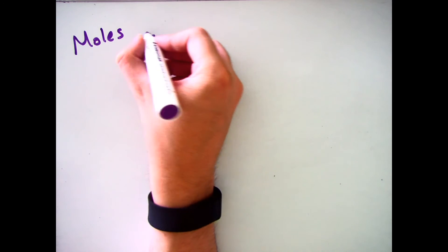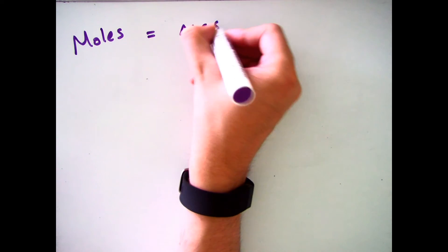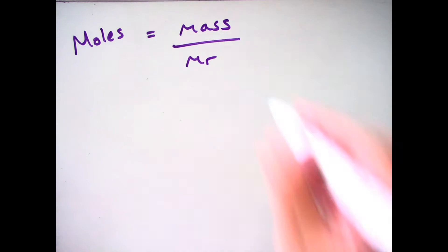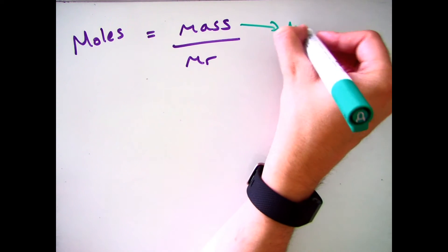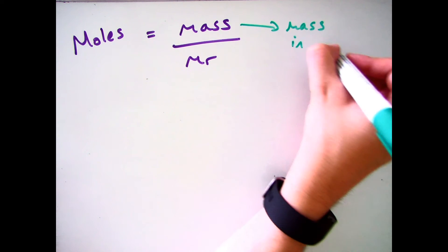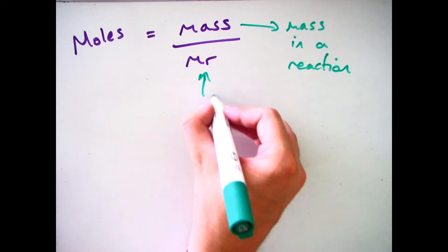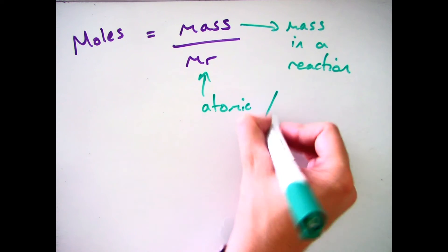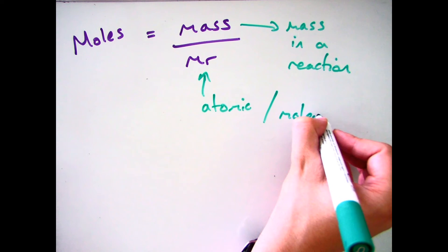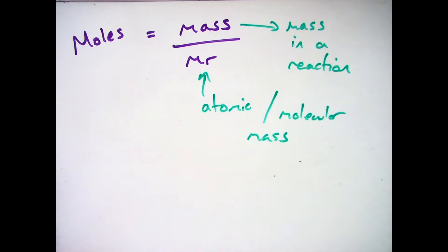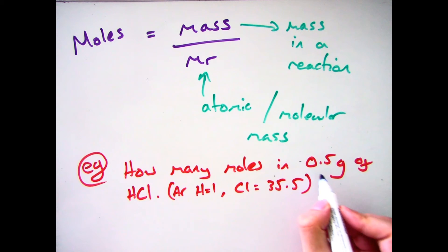There's an equation you need to know for this, which is: moles = mass divided by Mr. The mass will be given in the question, and the Mr is the relative formula mass, which you learned about in a previous video and is the sum of all the atomic masses of a compound or substance.